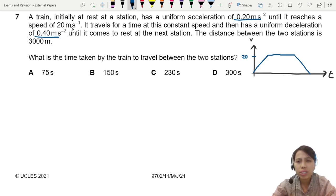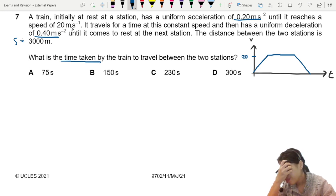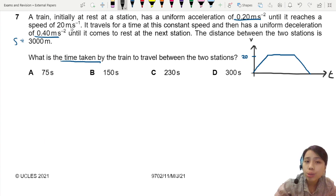So the distance between the two stations is 3000 meter total distance. What is the time taken by the train to travel between the two stations? So this one has quite a few stages to it and usually we have to deal with them separately. So for example, let's look at this graph here. I'm going to call this section 1, section 2 and section 3.